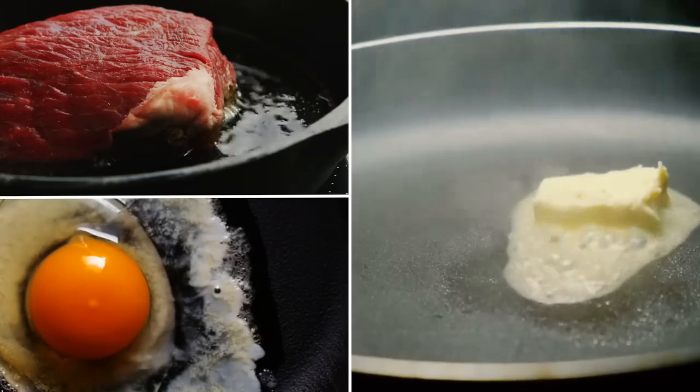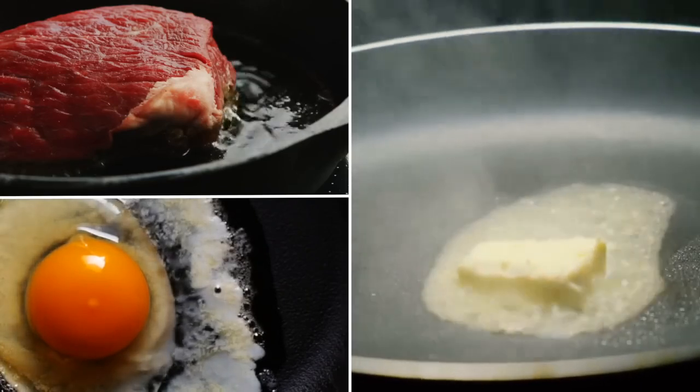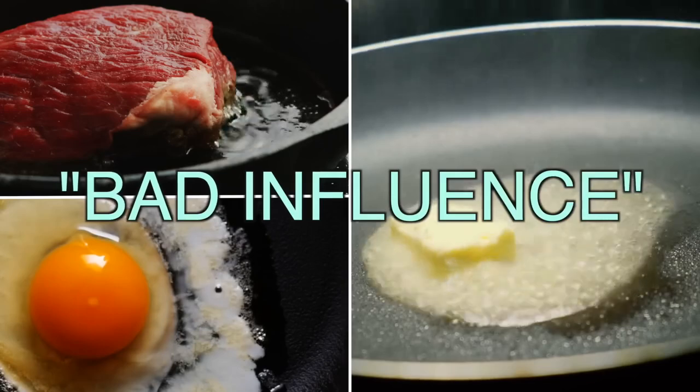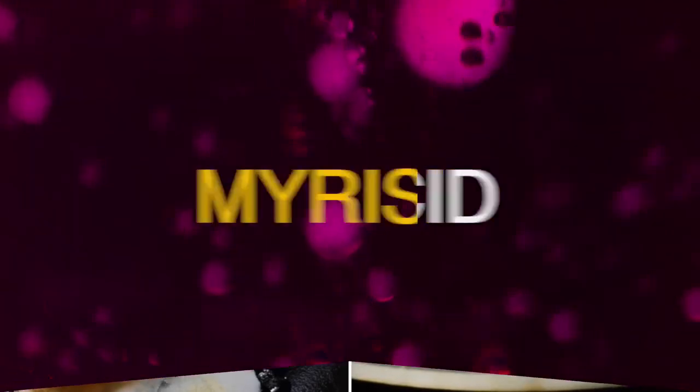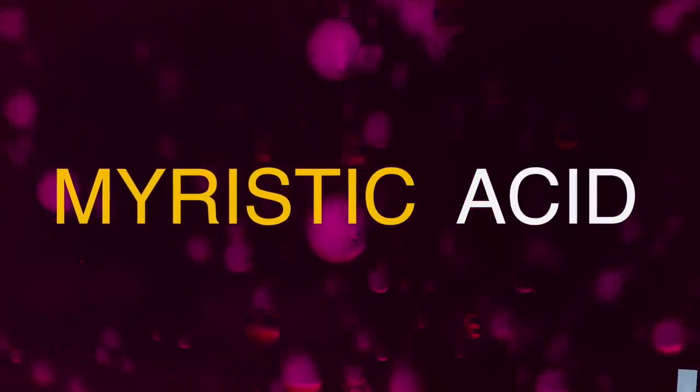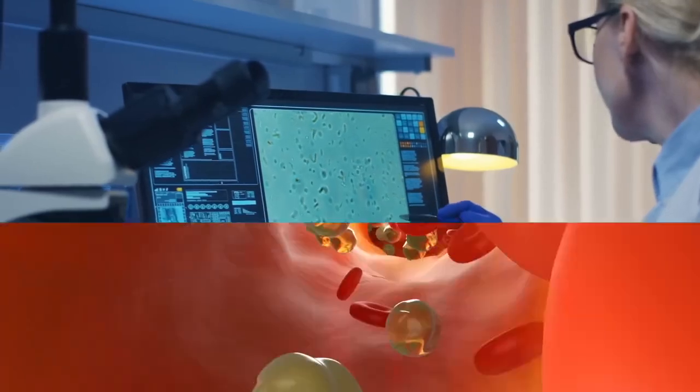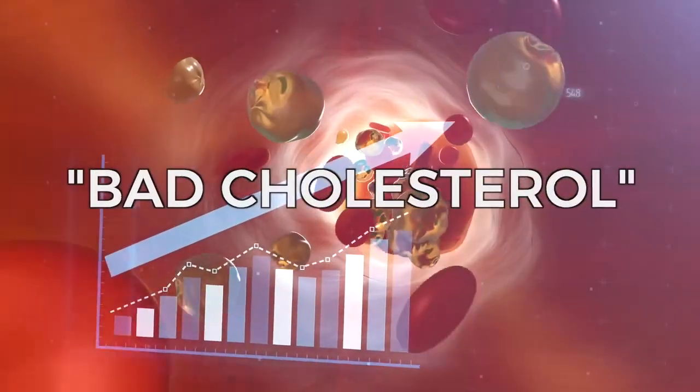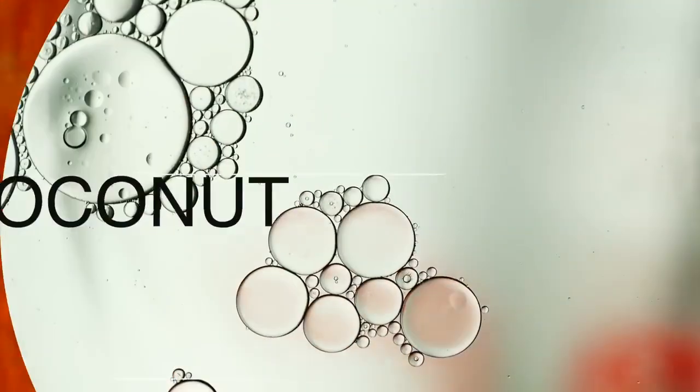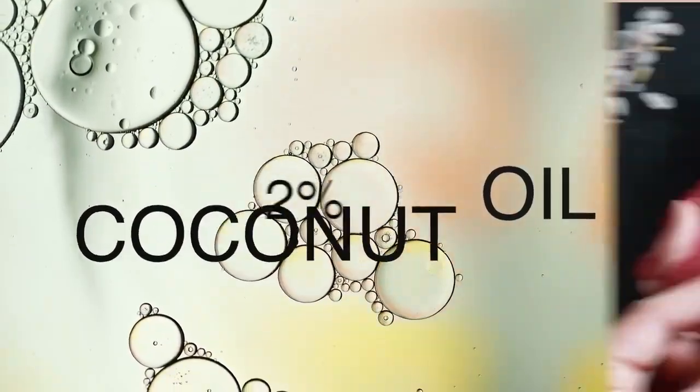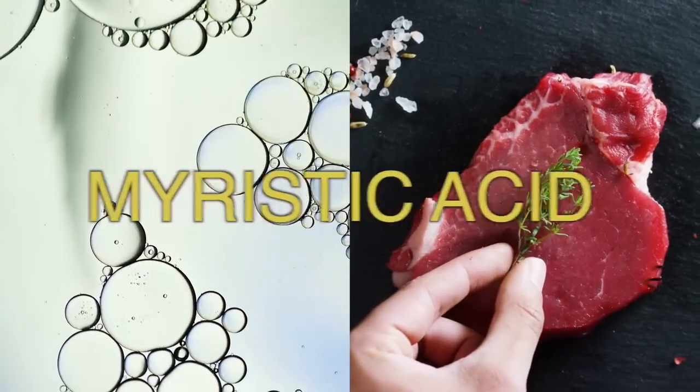Out of all the different types of saturated fat, the one that has the biggest so-called bad influence on your cholesterol is something called myristic acid. Myristic acid has been studied and found that it can increase your bad cholesterol. Myristic acid by itself is very high in coconut oil, but only 2% of the saturated fat in red meat is this myristic acid. So tell me why saturated fat is bad if it's in coconut oil.